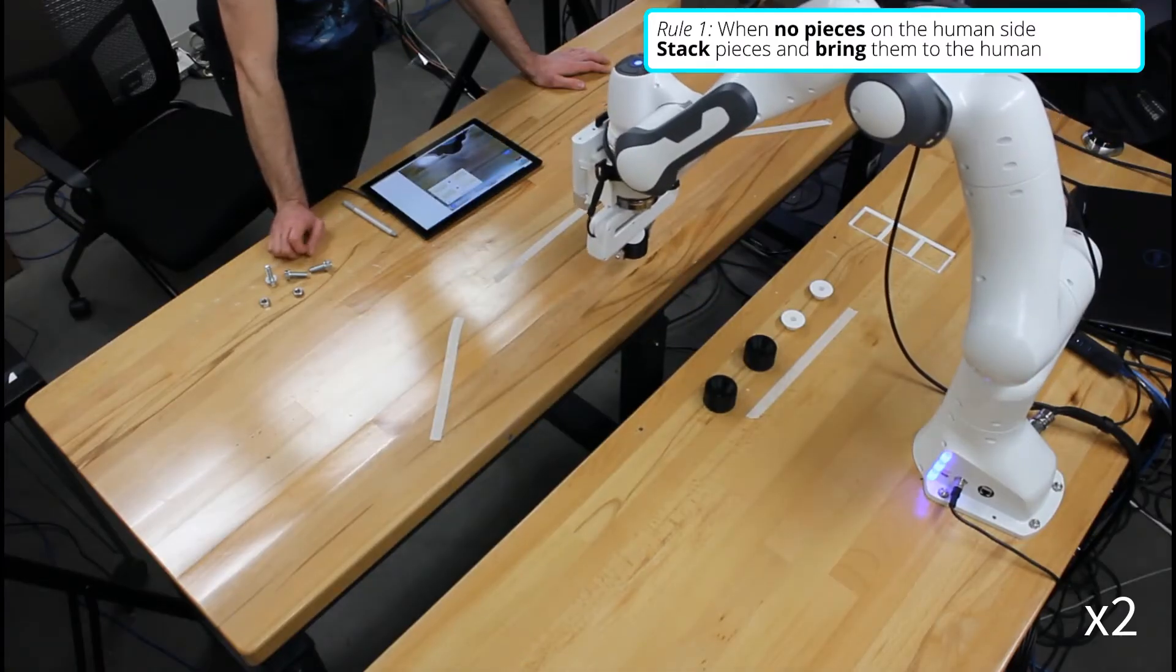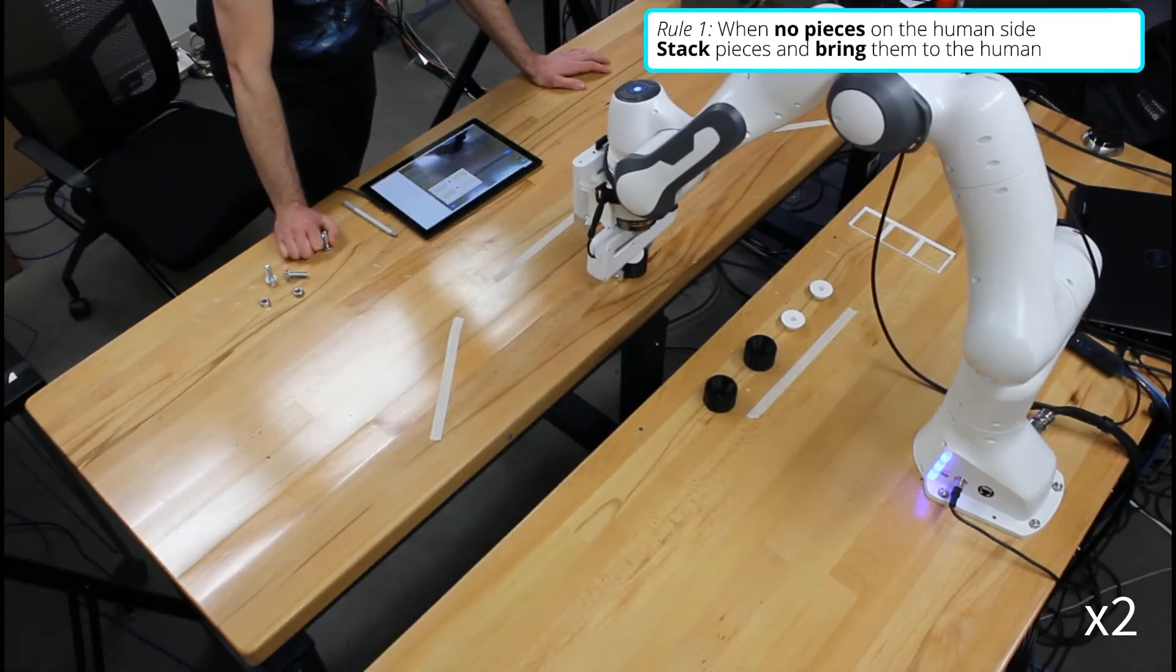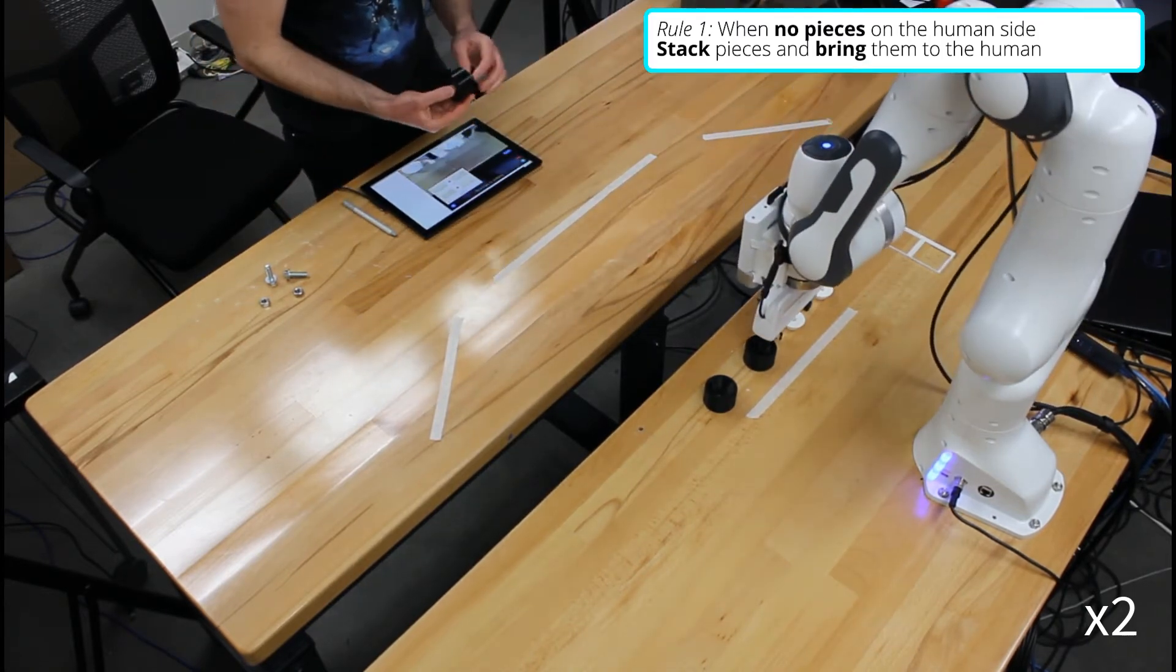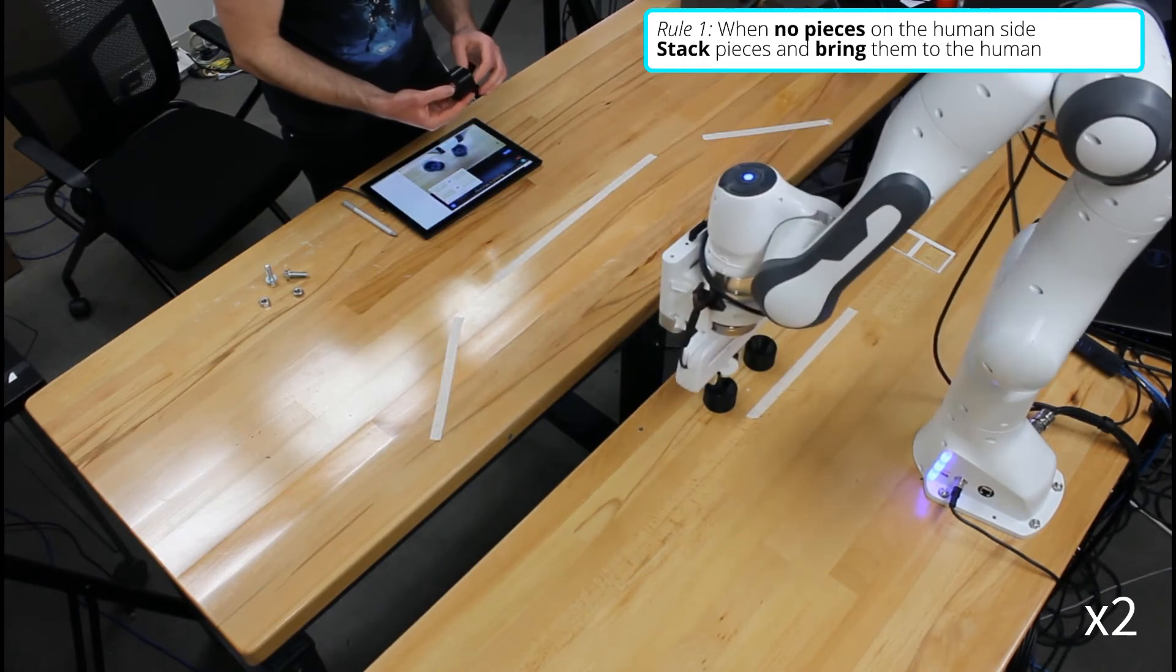Once the robot has brought over and stacked the pieces, the human can perform the manual assembly. When the human removes the piece from the workspace, the robot will again execute the trigger to fetch another set of pieces.